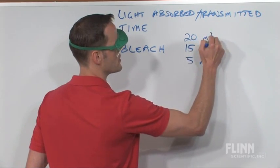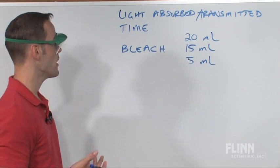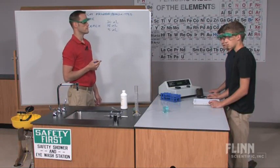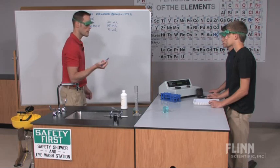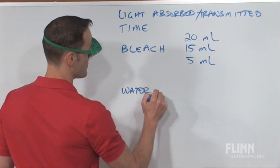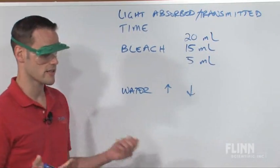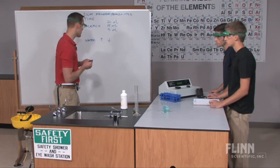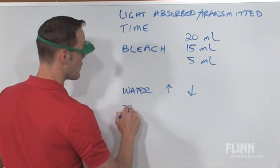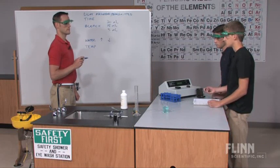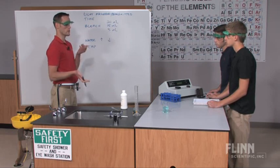Beyond bleach concentration, students suggest changing the amount of water and also the temperature. For temperature, we could have one group go up by 10 degrees to 32°C and one group go down by 10 degrees to 12°C, using a hot plate and an ice bath to control conditions.